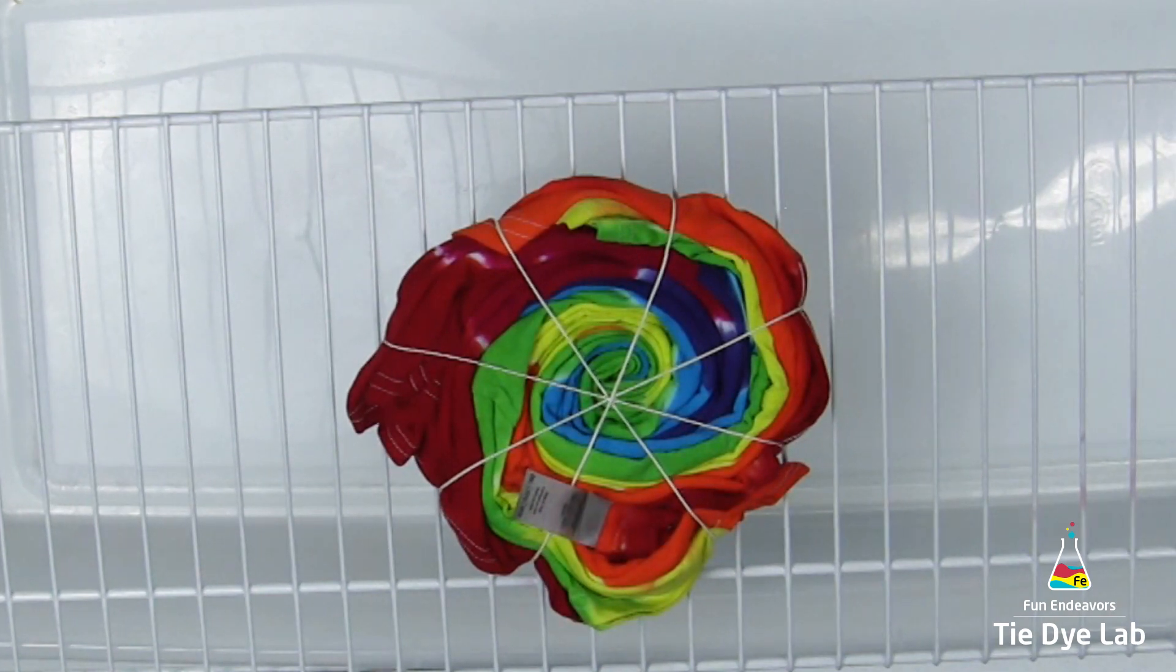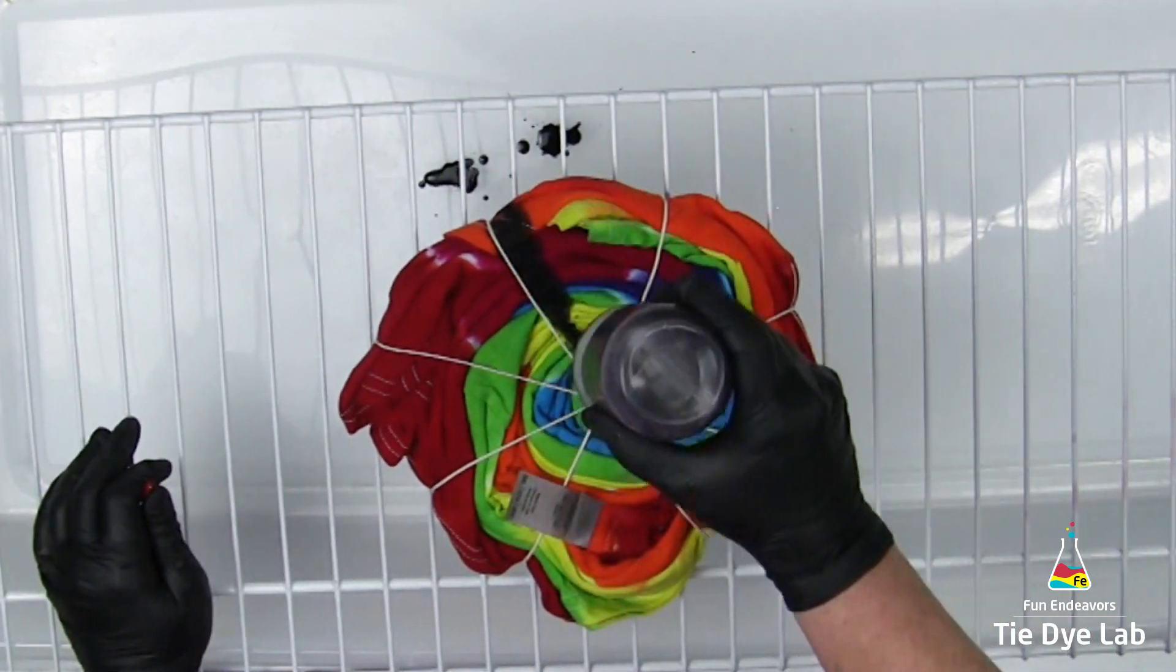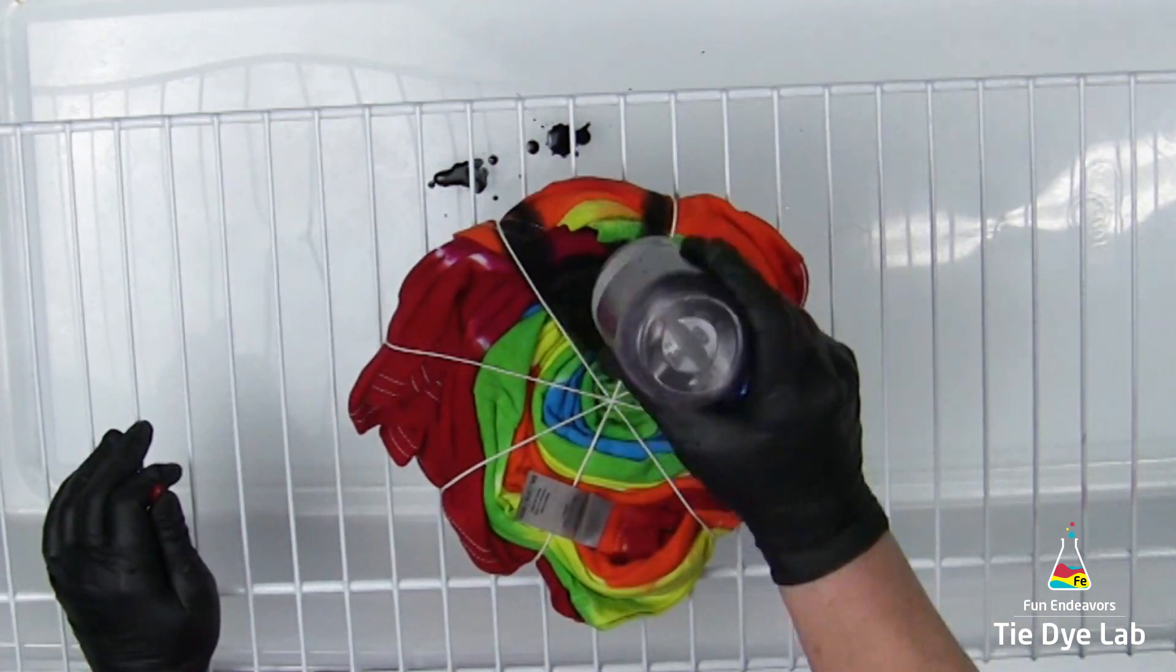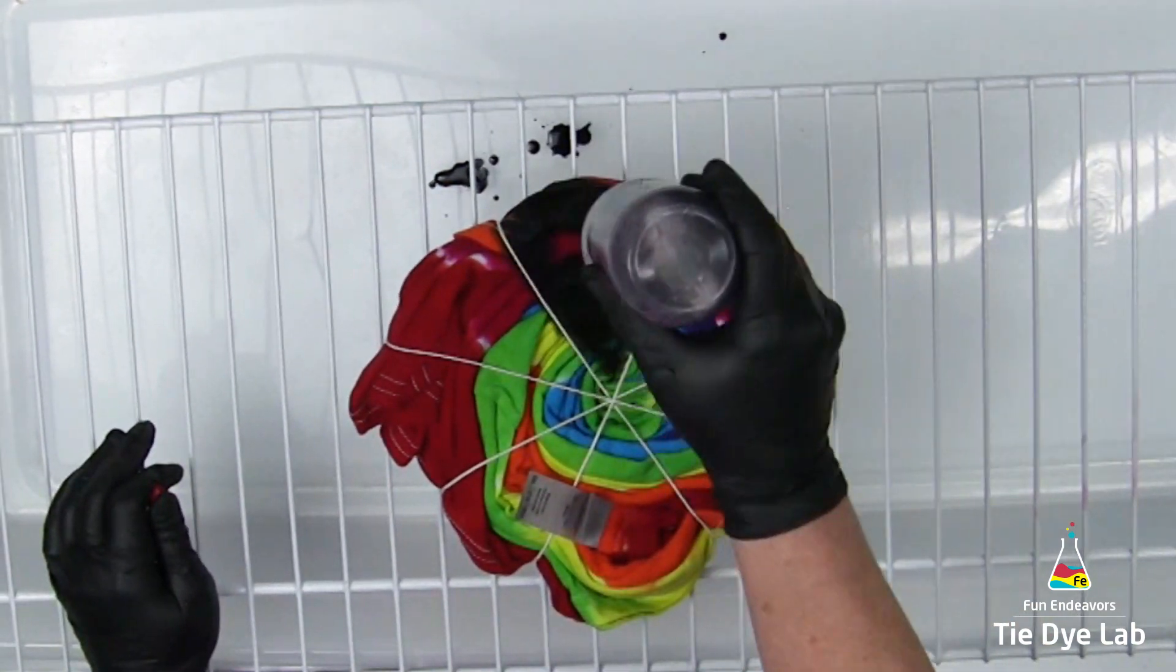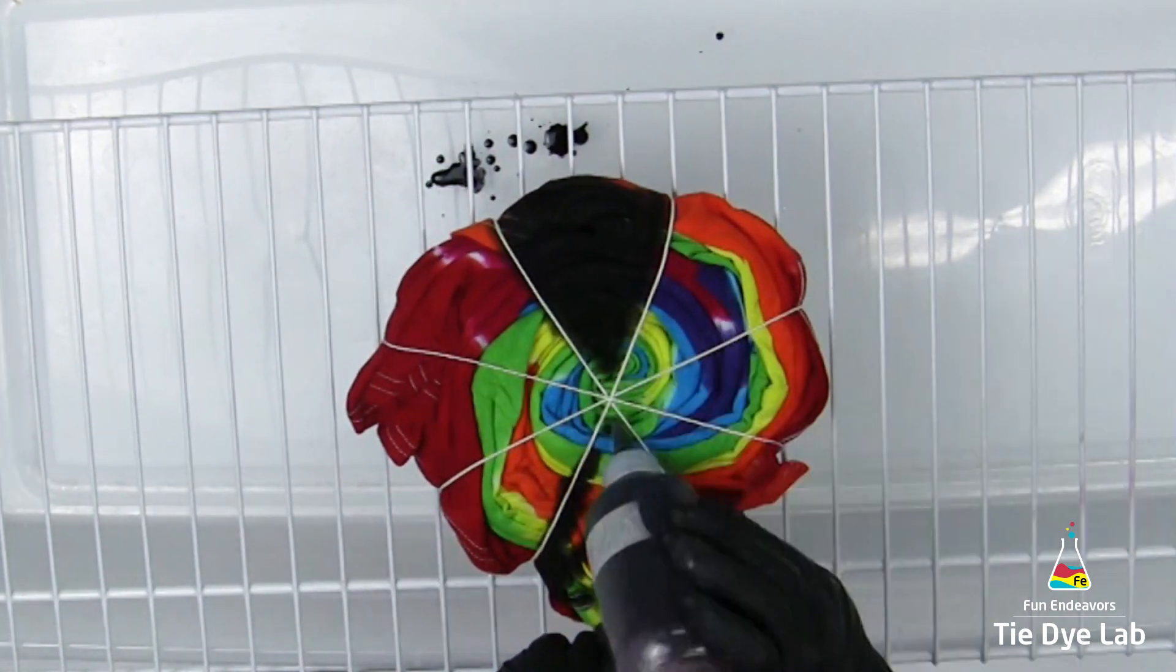I've mixed up some Dark Black from Custom Colors, and then since I did not re-soak the shirt in soda ash, I added a little bit of soda ash powder to my dye and I'm going to apply it immediately to my shirt.